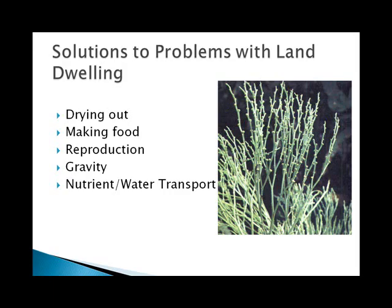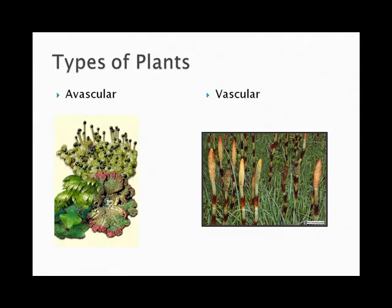For nutrient and water transport, they developed into two types: avascular plants and vascular plants. Avascular plants transport water and nutrients through diffusion or osmosis, so it's relatively slow. Vascular plants developed vessels to transport these nutrients and waters. All avascular plants are known as the bryophytes, and vascular plants are known as the tracheophytes.